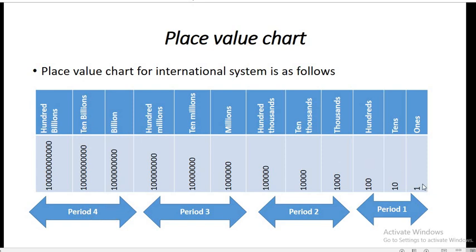Now let us look at the number of zeros for each place value. For ones it is 1, tens has one zero, hundreds has two zeros, thousands has three zeros, ten thousands has four zeros, hundred thousands has five zeros, millions has six zeros, ten millions has seven, hundred millions has eight, billions has nine, ten billions has ten zeros, and hundred billions has eleven zeros. As you can see, there is a set of three place values for every period.